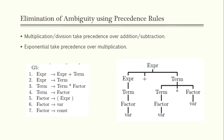One way to remove ambiguity is using a precedence rule. In mathematics, we have precedence rules: multiplication and division always take precedence over addition and subtraction, and exponentiation takes precedence over multiplication. We can use this and represent it in our grammar.